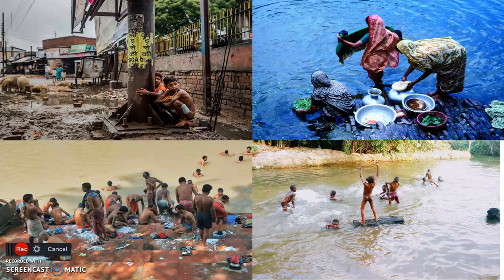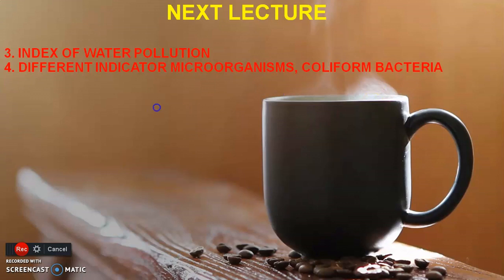So we have seen two points in today's lecture: the first point was types of water, and the second point was sources of microorganisms in water. In the next lecture, we are going to see the index of water pollution and then different indicator microorganisms including coliform bacteria. Thank you for watching this video, and we will meet in the next lecture.